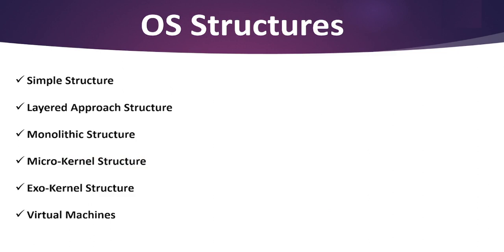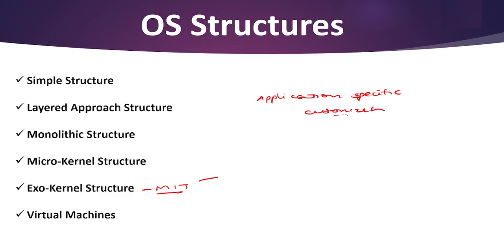The next type is the exokernel structure. An operating system called exokernel was created at MIT with the goal of offering application-level management of hardware resources. The exokernel architecture's goal is to enable application-specific customization by separating resource management from protection. The exokernel size tends to be minimal due to its limited operability.